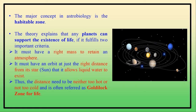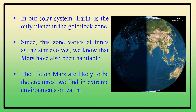The habitable zone means where living organisms can survive. Any planet that can support the existence of life must fulfill two criteria. First, it must have a right mass to retain an atmosphere — atmospheric air and oxygen are important for breathing. Second, it must have an orbit at the right distance to allow water to exist in liquid state — neither too hot nor too cold. This is often referred to as the goldilocks zone for life. In our solar system, Earth is the only planet in the goldilocks zone.